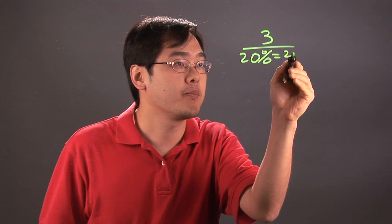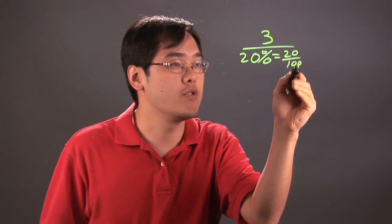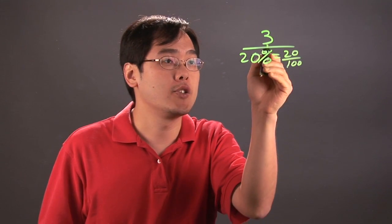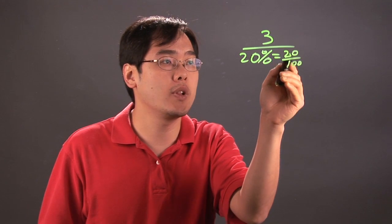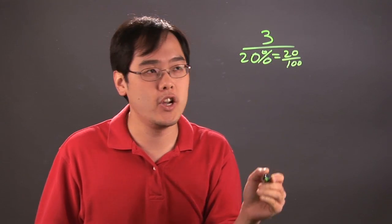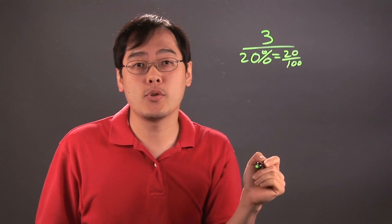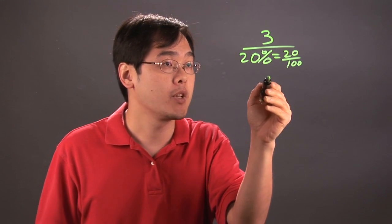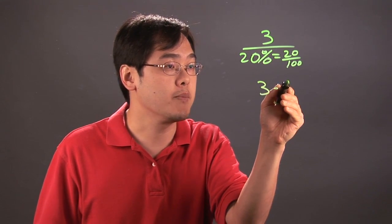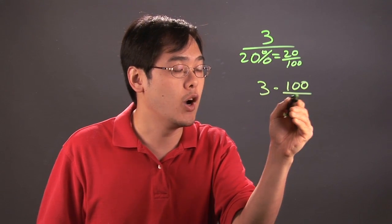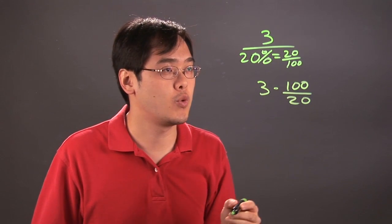You can think of 20% as 20 over 100 and then go from there. So when you're dividing 3 by 20%, you're really dividing 3 by 20 over 100. Where you want to go from there is think about what happens when you're dividing by a fraction. You're really multiplying by the reciprocal. So it's going to be 3 times 100 over 20, which is the reciprocal of 20 over 100.